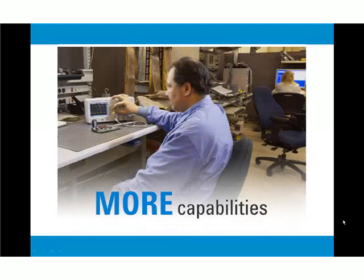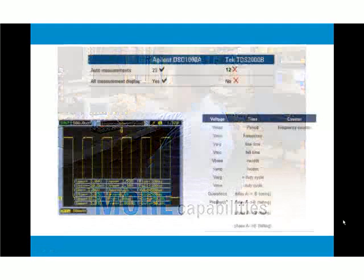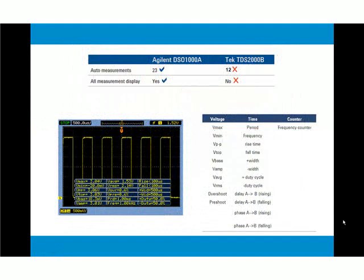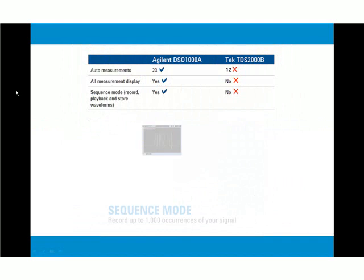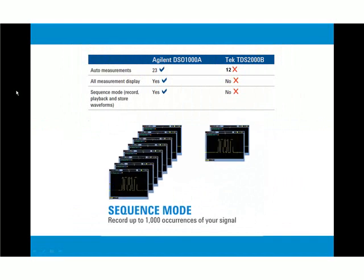Feel like you're using a much higher priced scope? 23 automatic measurements give you quick access to powerful functions. An all-measurement display allows for quick view and sharing of all your measurements.